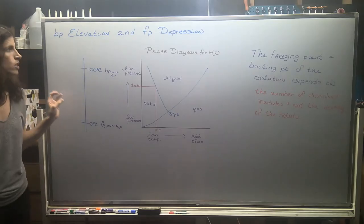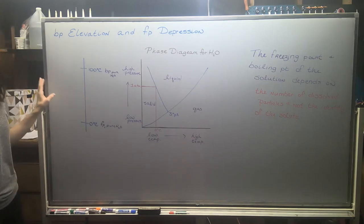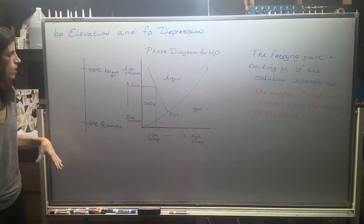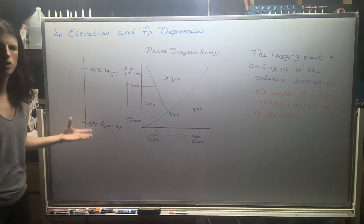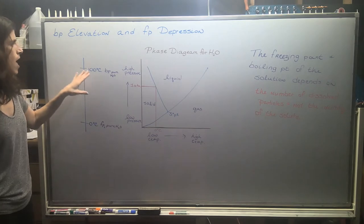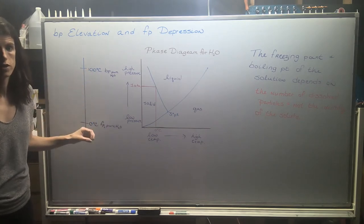We're going to begin a short section here on boiling point elevation and freezing point depression. It's a really cool phenomenon. So typically, pure water will freeze at zero degrees Celsius, right? And it's going to boil at 100 degrees Celsius.